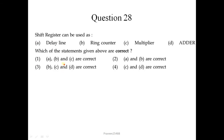Question number 28: shift register can be used as a delay line — this is correct — and can be used as a ring counter — this is also correct. Not for multiplier and also not for adder. So A and B are correct, and the correct option is the second one.